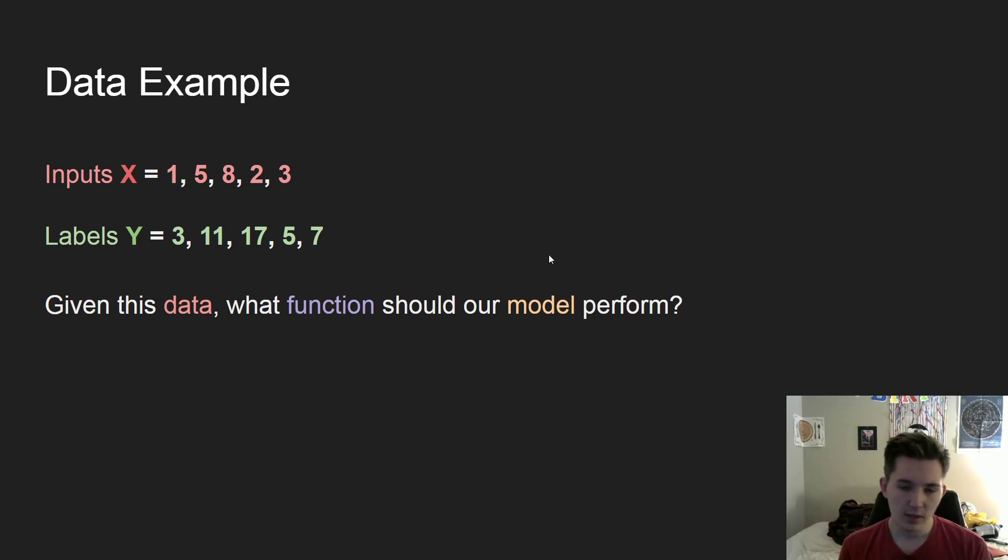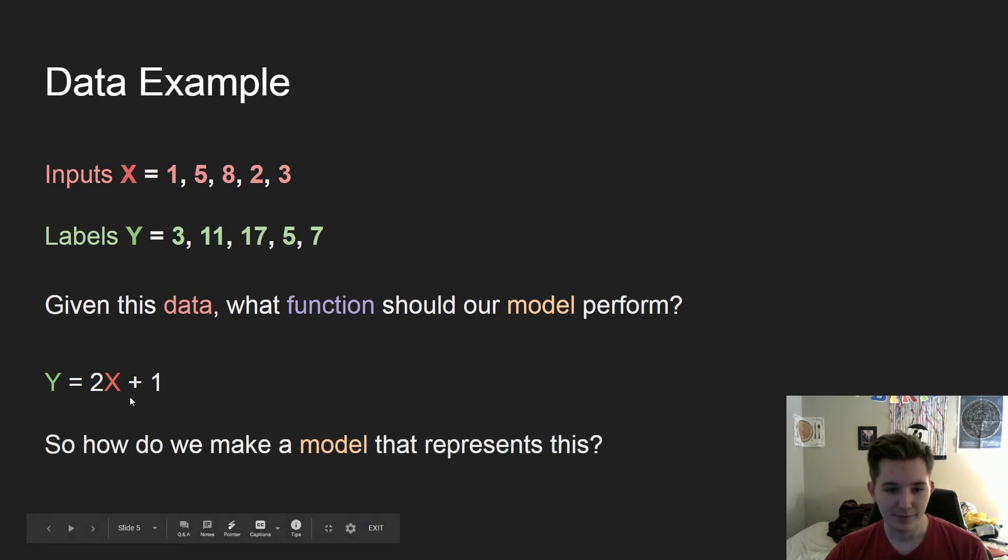And I'll give you a second to pause and just figure it out for yourself. It's a pretty simple function, but if you didn't pause, or if you did pause, the answer is y equals 2x plus 1. So it's very simple. You can check it yourself. And we can see that's very easy for us to do, but how do we make a model do this? And what even is our model?